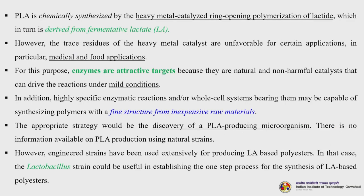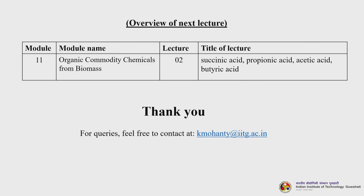PLA is chemically synthesized by heavy metal-catalyzed ring opening polymerization of lactide, derived from fermentation lactate. However, trace residues of heavy metal catalyst are unfavorable for certain applications, particularly medical and food applications. For this purpose, enzymes are attractive targets as natural non-harmful catalysts that can drive reactions under mild conditions. Engineered strains have been used extensively for producing LA-based polyesters, and the lactobacillus strain could be useful in establishing a one-step process for the synthesis of LA-based polyesters.